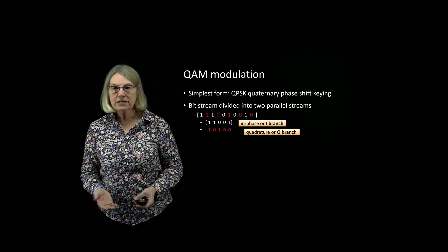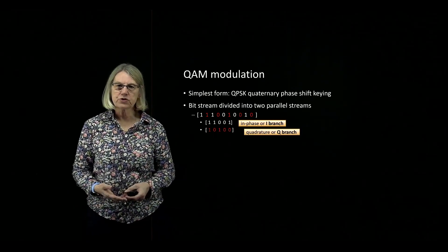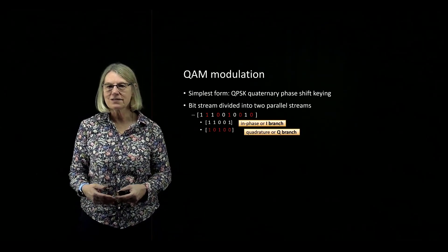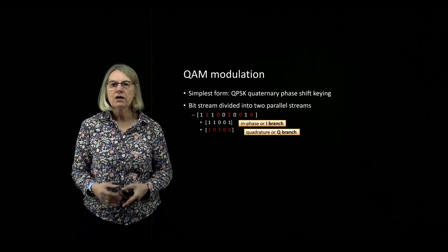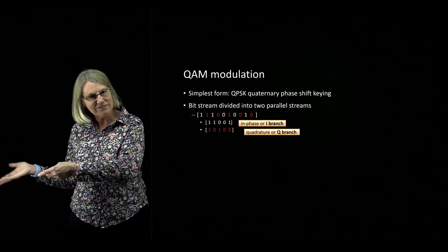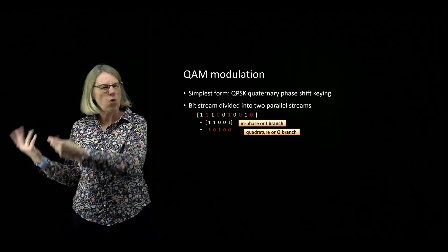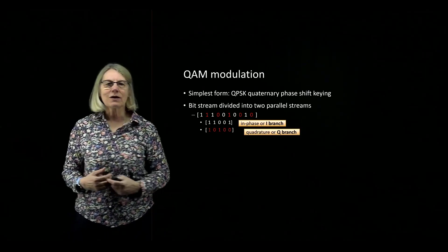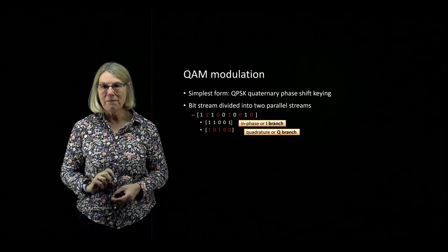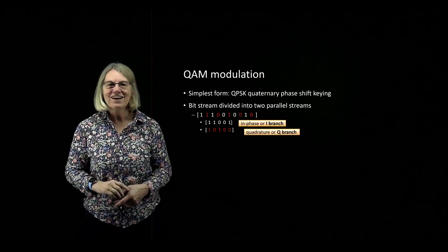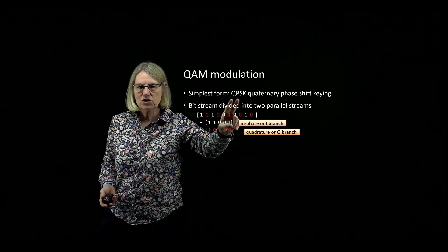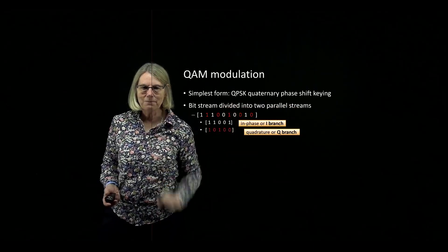QAM modulation — quadrature amplitude modulation — has in its simplest form QPSK. There's also BPSK, binary phase shift keying, but that's 1D. I'm going to talk about 2D, and the simplest 2D QAM modulation is quaternary phase shift keying, also known as QPSK.